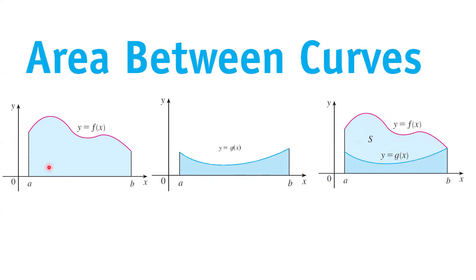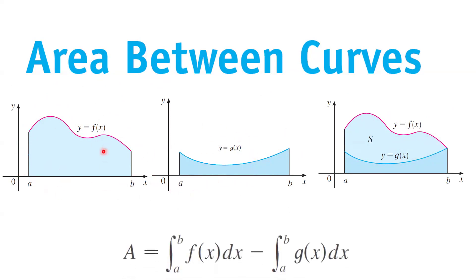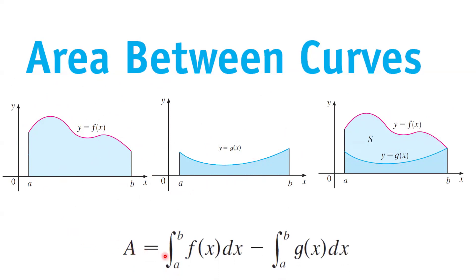So you're basically going to subtract the smaller area from the larger area. The area of S is the definite integral of function f minus the definite integral of function g. So you're taking this larger area, calculating this smaller area, and doing the subtraction to find the area bounded between these two functions.